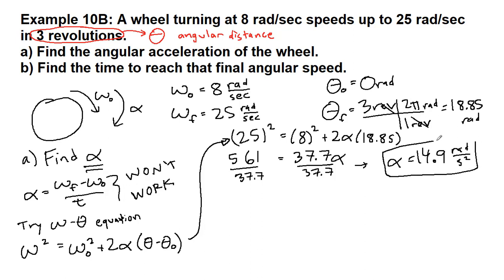And we get that alpha is 14.9 radians per second squared. All right, so that's part A. For part B, we can now use that piece of information. Now, this is positive because we're speeding up and our initial angular velocity was also positive.